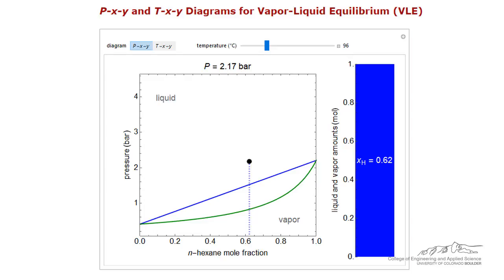This screencast reinforces some of the main aspects of a PXY diagram for vapor-liquid equilibrium of a binary system. In a PXY diagram, the temperature is fixed.